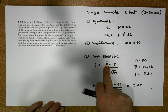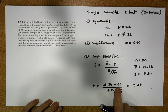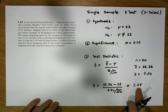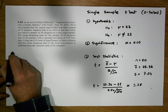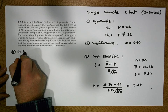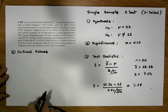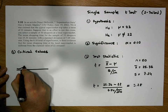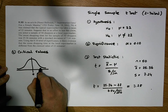So in standard units, the evidence is a distance of 3.28 standard units away from our hypothesized mean value. The question is: is this far enough away from 22 to be significantly different? To figure this out we need to calculate our critical values for our t distribution.